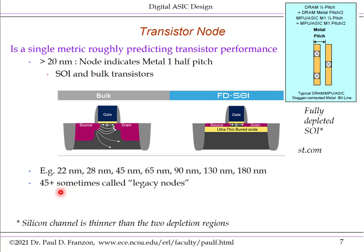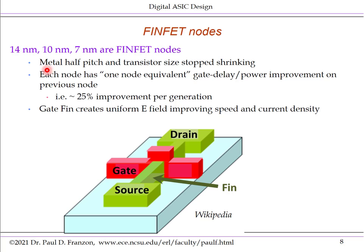Once we got beyond the 20-nanometer node, things started to change both in terms of transistor design and also what we meant by a node. The nodes at 14, 10, 7, and 5 nanometer are called FinFET nodes, because instead of the planar FETs seen previously, the gate is fabricated as a fin. The channel between the source and drain lies in this fin, and the gate surrounds the channel on three sides.